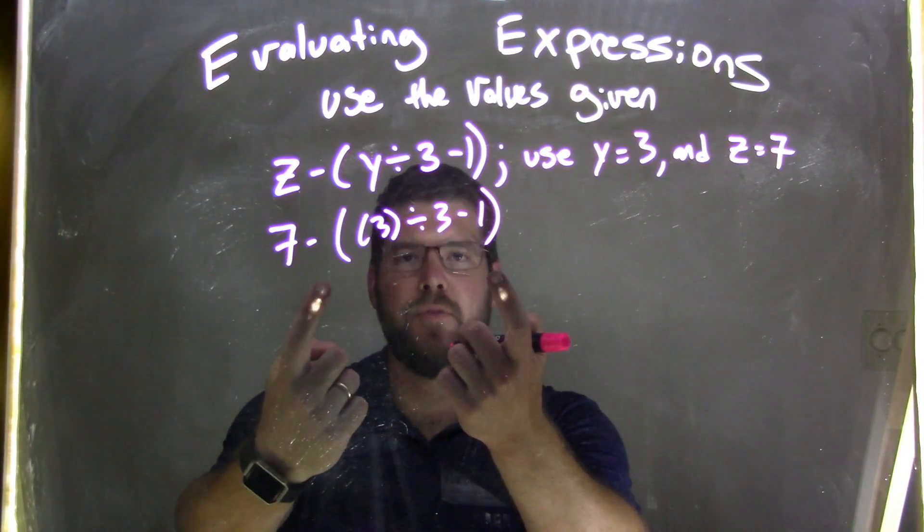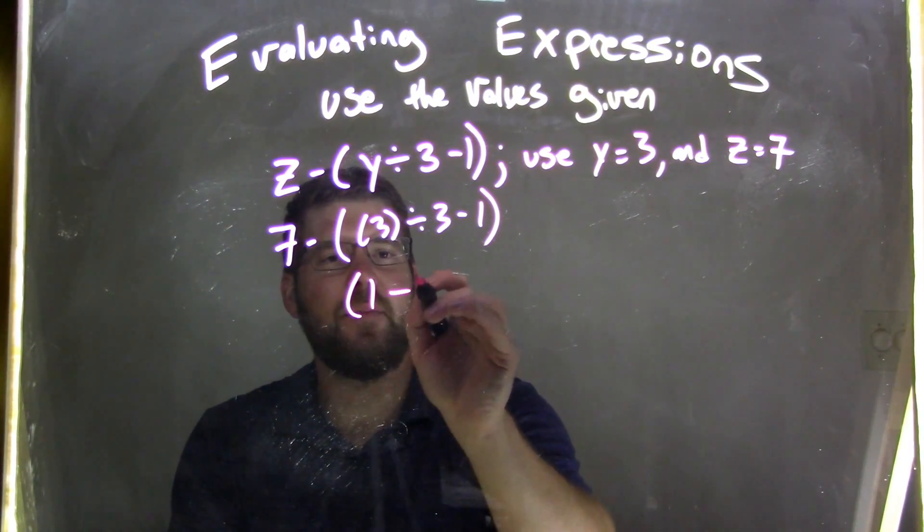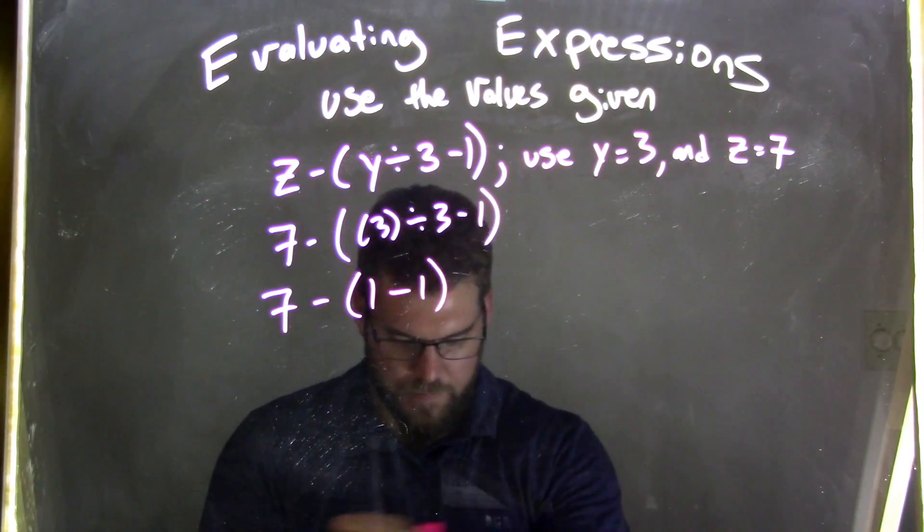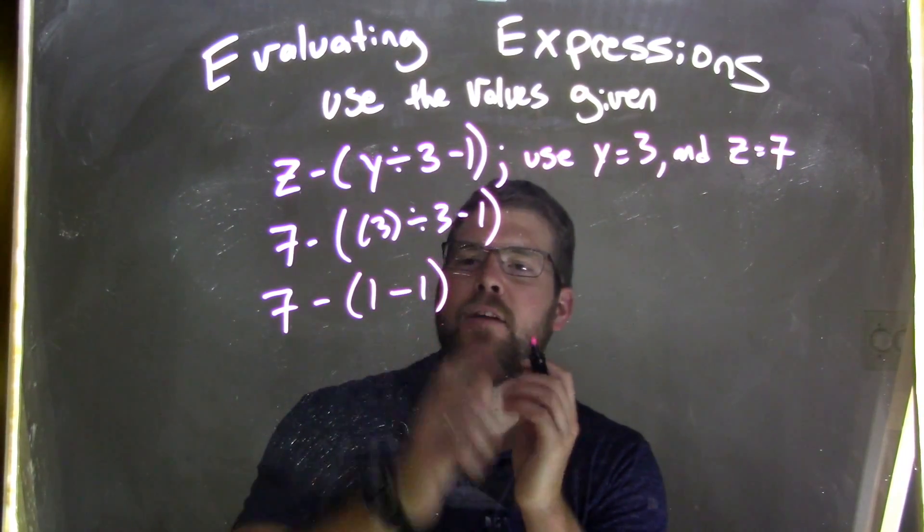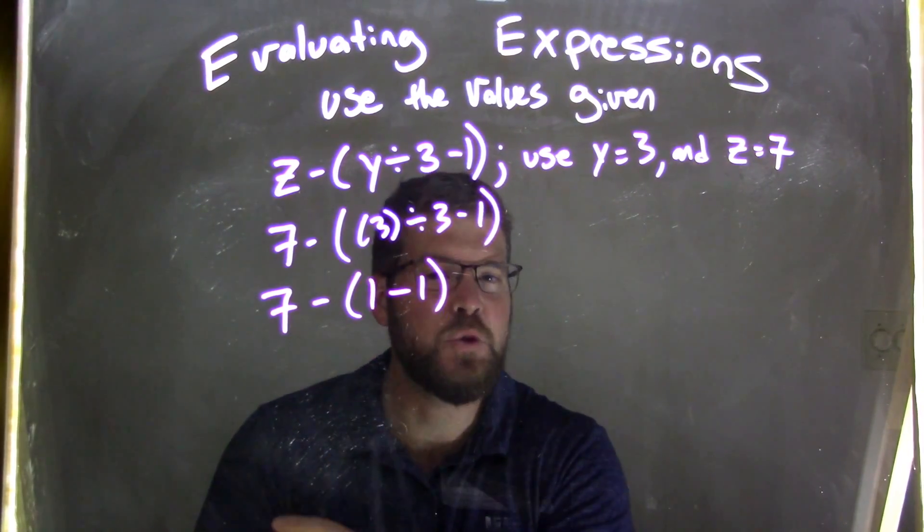So let's deal with inside this parentheses first. 3 divided by 3, well that's just 1. Any number divided by itself is 1. So now we have 1 minus 1, which is 0. It's inside the parentheses, we need to do that first.